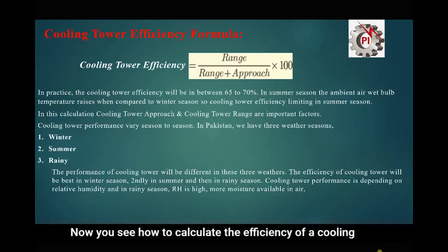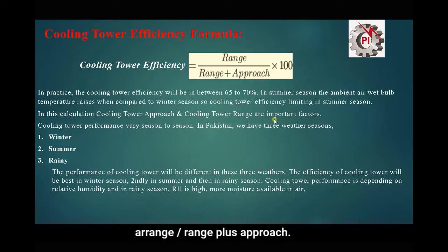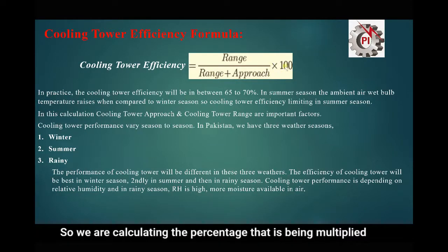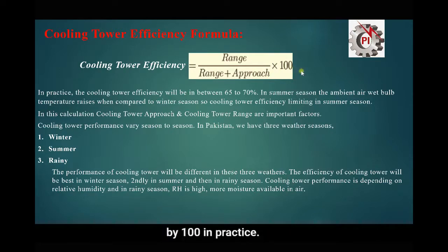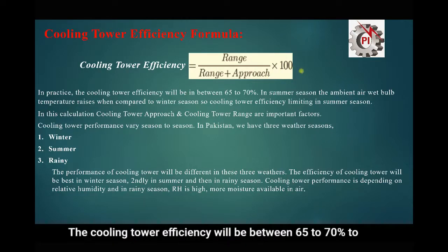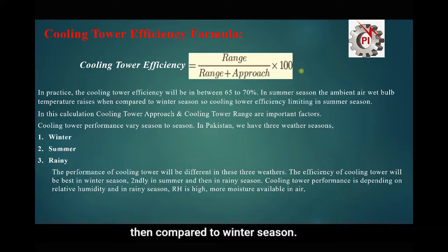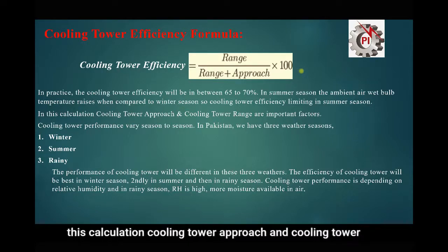Now we will see how to calculate the efficiency of a cooling tower. The formula is: Efficiency = Range / (Range + Approach) × 100%. In practice, the cooling tower efficiency will be between 65 to 70 percent. In summer season, the ambient air wet bulb temperature rises compared to winter season, so cooling tower efficiency is limited in summer.